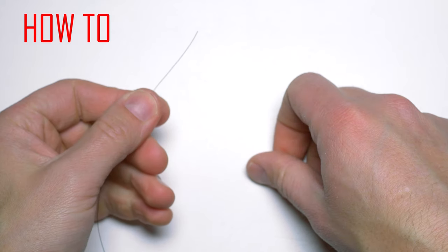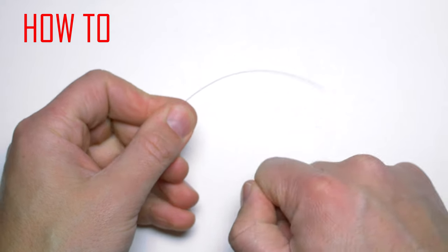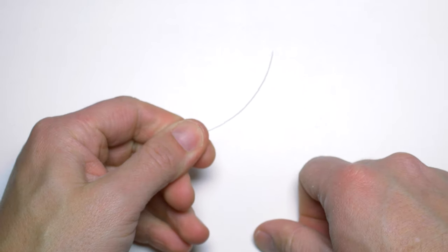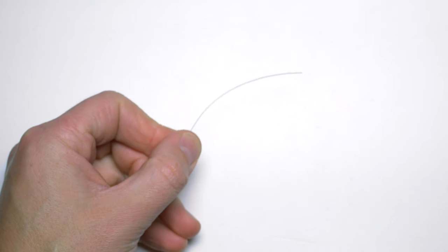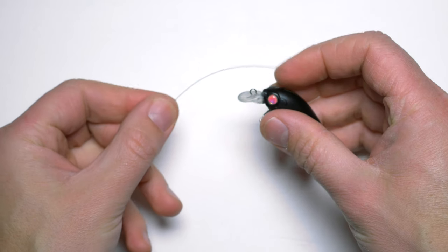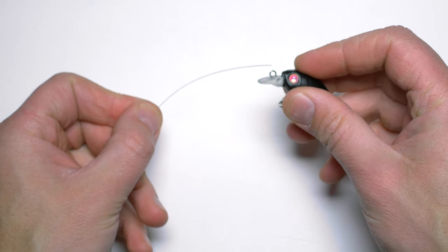I will grab my main line or my hook link, which should be made of fluorocarbon or monofilament line, as this knot doesn't work as well with braided lines. Then I will grab my element which I want to tie into the loop.